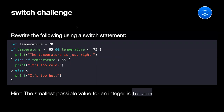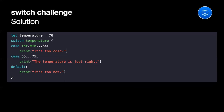Here's how to convert an if statement to a switch. With temperature at 76, we write: switch temperature — case Int.min...64 prints 'too cold,' case 65...75 prints 'temperature is just right,' and the default case covers anything above 75, printing 'it is too hot.'